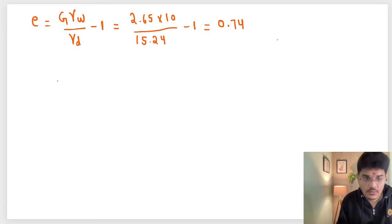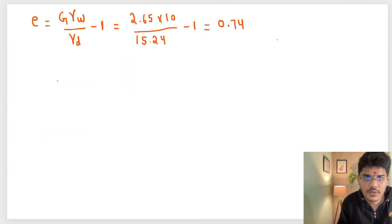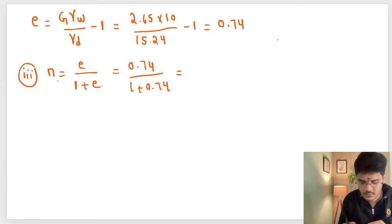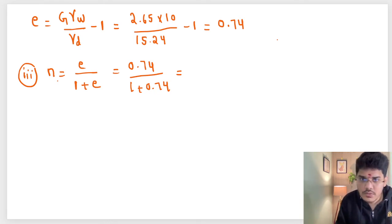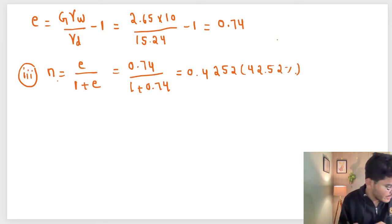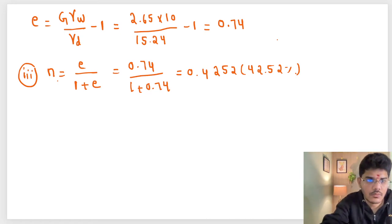So e value is found. If we know the void ratio, porosity n can also be found: n equals e divided by (1 plus e), so n equals 0.74 divided by 1.74, which equals 0.4252, that means 42.52 percent.